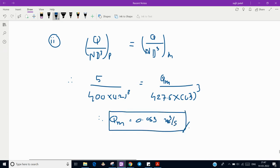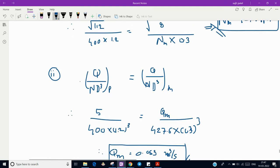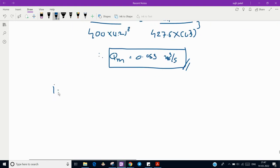Now we have to use third similarity equation, that is for power. Power upon N cube D power 5 of prototype will be power upon N cube D power 5 of model. These three equations you have to remember and know how these equations are derived.